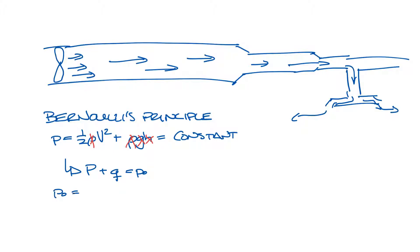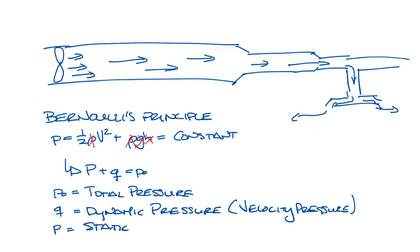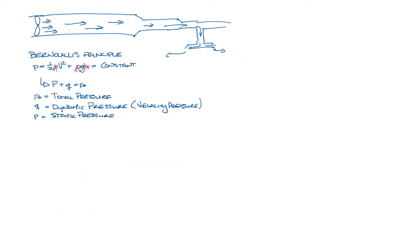P plus Q equals P naught. P naught is the total pressure. Q is the dynamic pressure, also known as velocity pressure. P is the static pressure. So now we have the equation Tp equals Vp plus Sp, or total pressure equals velocity pressure plus static pressure.